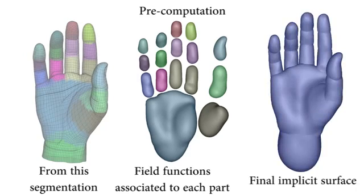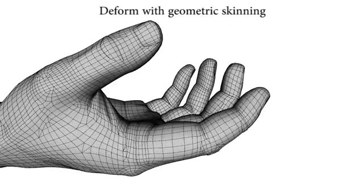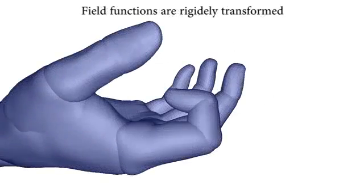They are combined with implicit composition operators to define an implicit surface approximating the whole mesh. During the animation, the mesh is deformed with geometric skinning, while the field functions are rigidly transformed.